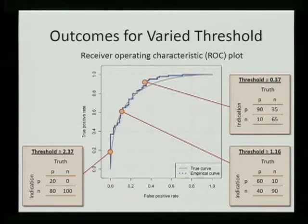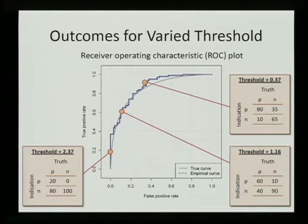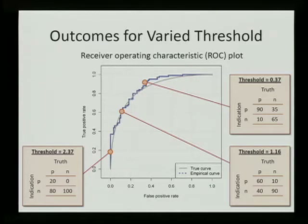Let's take a couple of examples. Suppose we apply a threshold of 2.37: the number of false positives is zero out of 100, giving a false positive rate of zero, and the number of true positives is 20 out of 100, giving a true positive rate of 0.2 — corresponding to the point at coordinates (0, 0.2). If we lower the threshold further, we observe 10 false positives out of 100, giving a false positive rate of 0.1, and 60 true positives out of 100, giving a true positive rate of 0.6 — coordinates (0.1, 0.6). The next point lands at coordinates (0.35, 0.9).